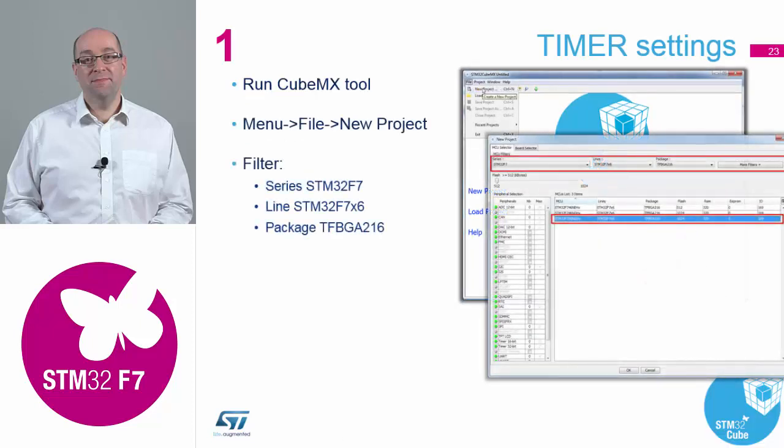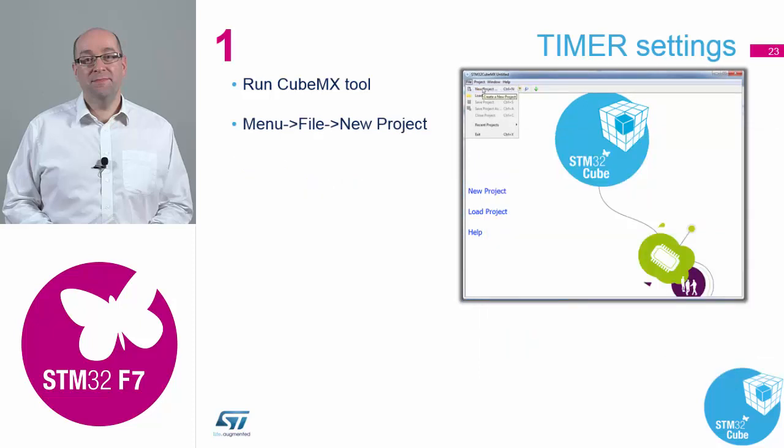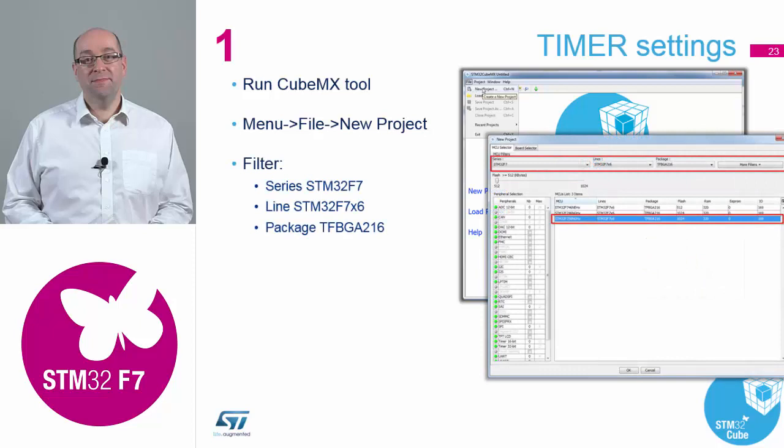First, select New Project — either from the menu at the top or from the big New Project button in the middle of the screen. This will present you with the selector guide for the available microcontrollers. This is a very good tool if you want to rationalize across the thousand different sales types we now have for any application.